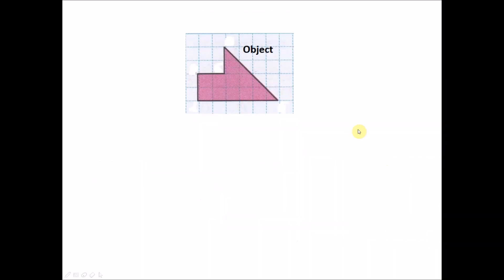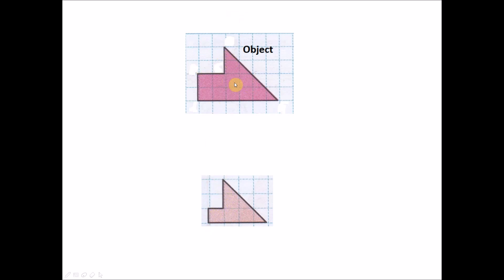Let's look at another example with the same object. When I draw it this way, is this a scale drawing? We compare all sides. Two sides are two units each — the same. But for this side, I only have one unit whereas the original has two units. So this side is the same size but this side is half. The sides are not proportional, hence this is not a scale drawing.